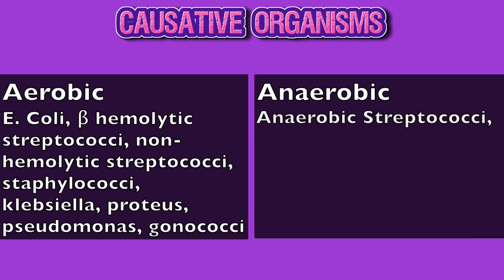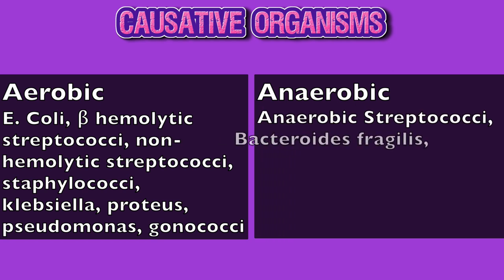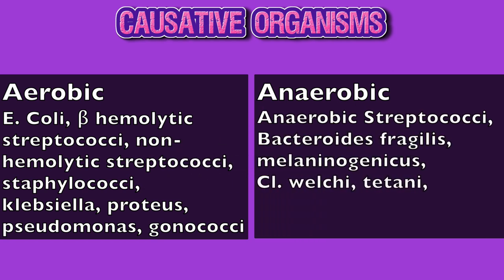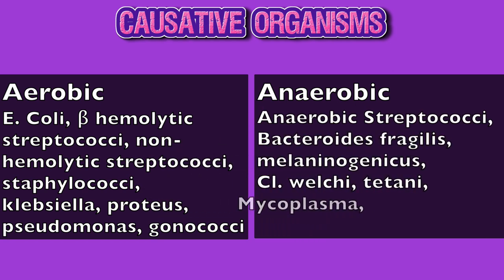The anaerobic organisms which can cause puerperal sepsis are anaerobic streptococci, Bacteroides fragilis, Bacteroides melaninogenicus, Clostridium welchii, Clostridium tetani, Mycoplasma, and Chlamydia.